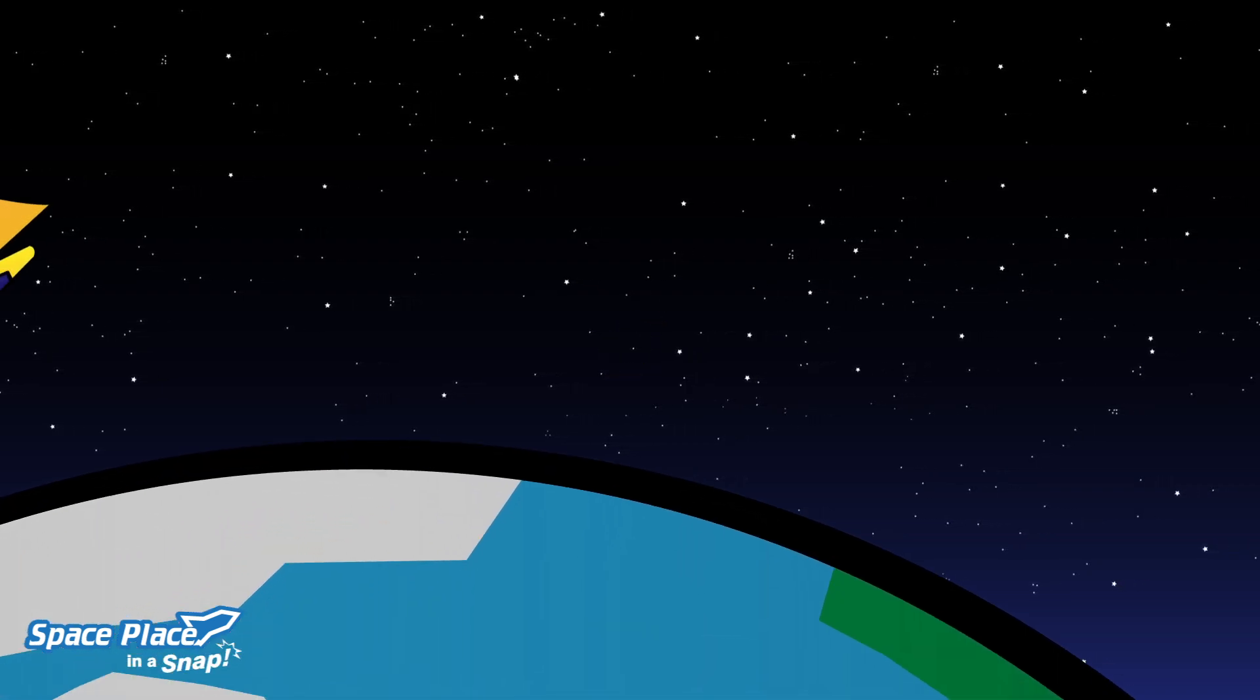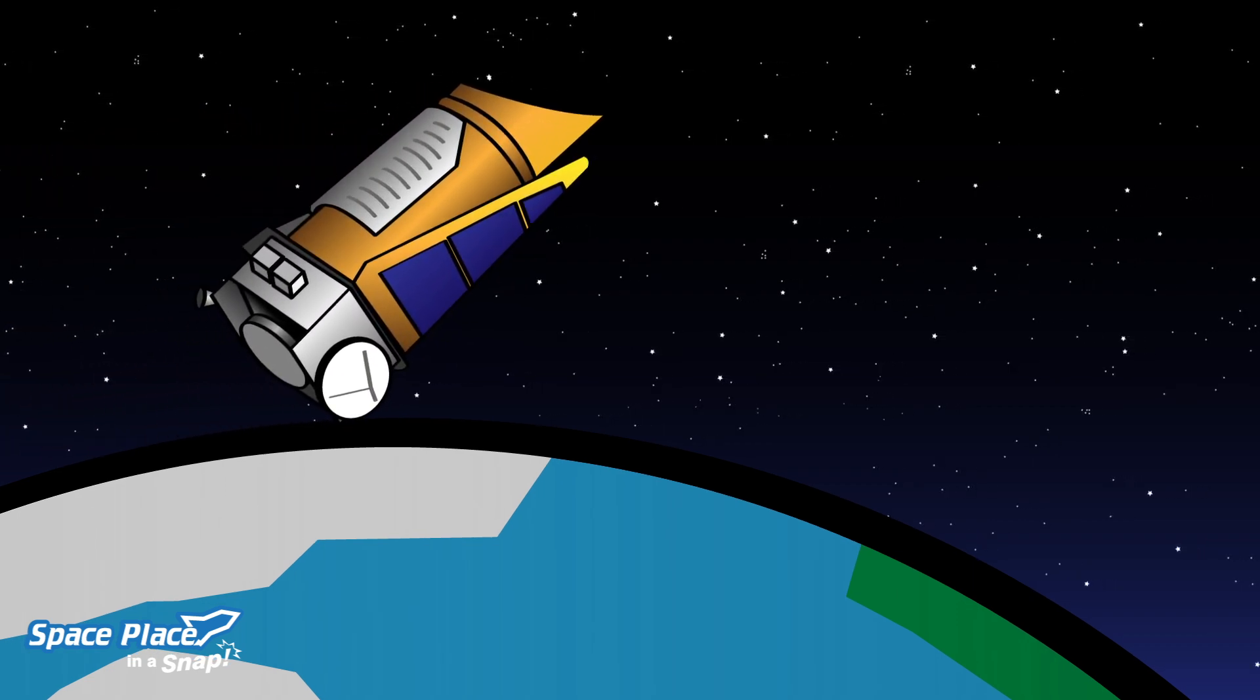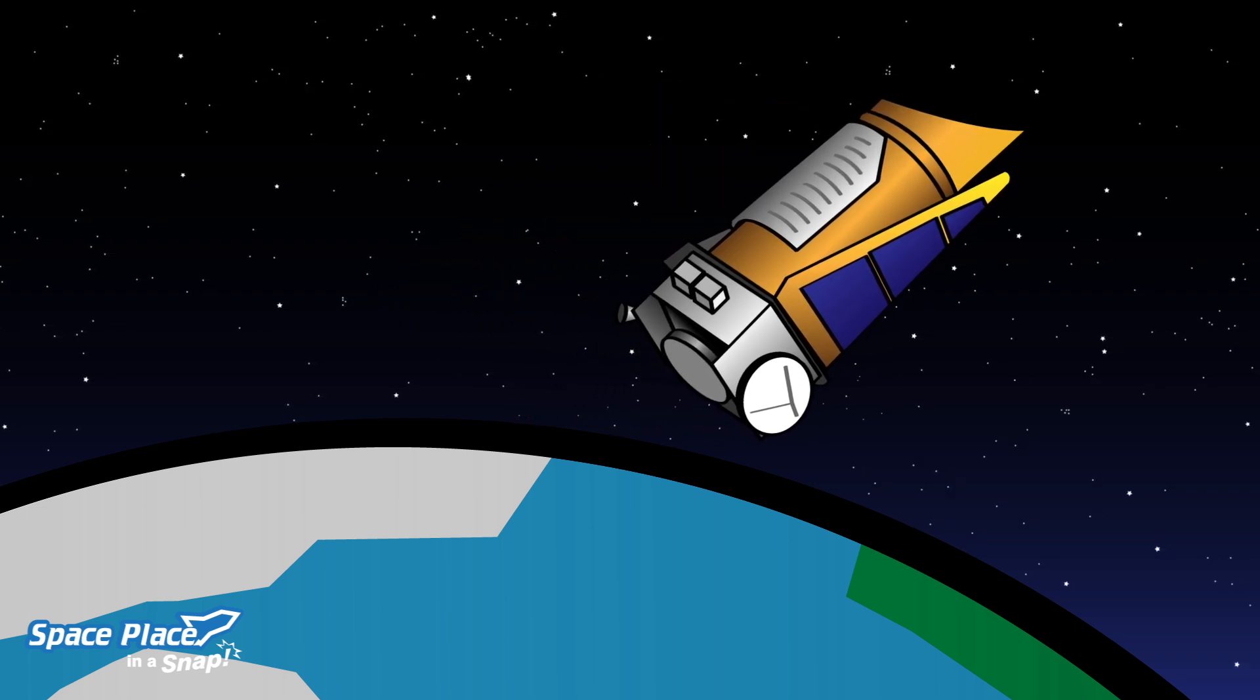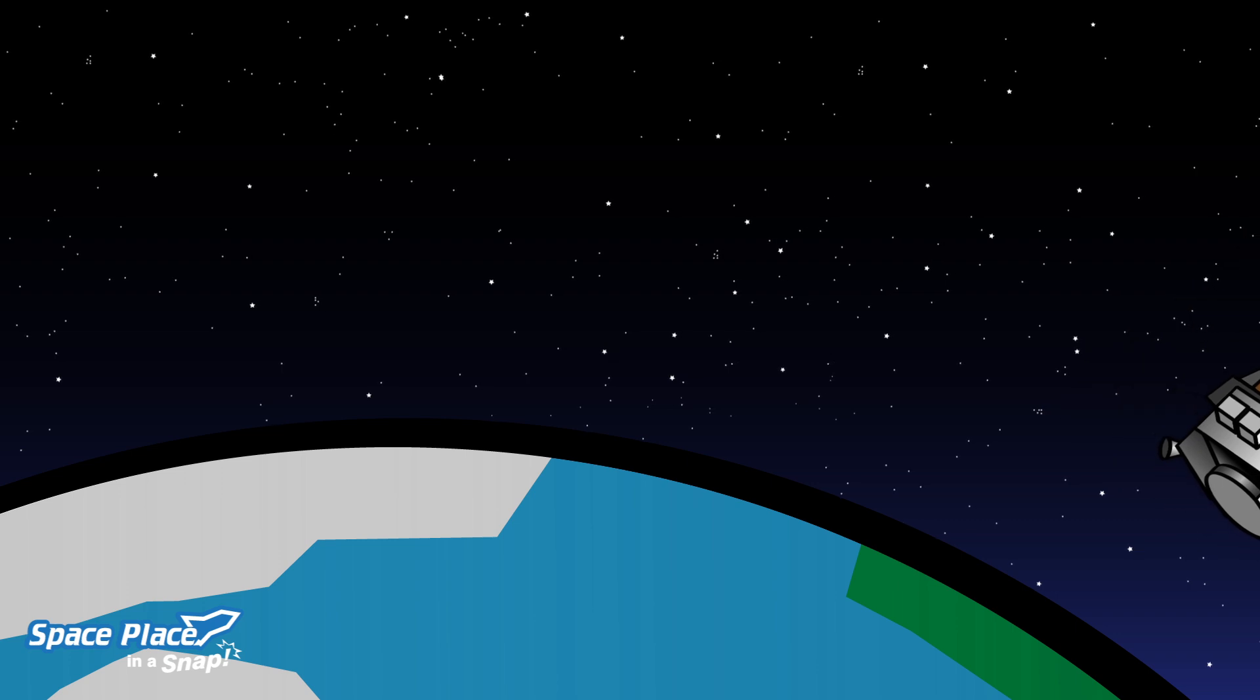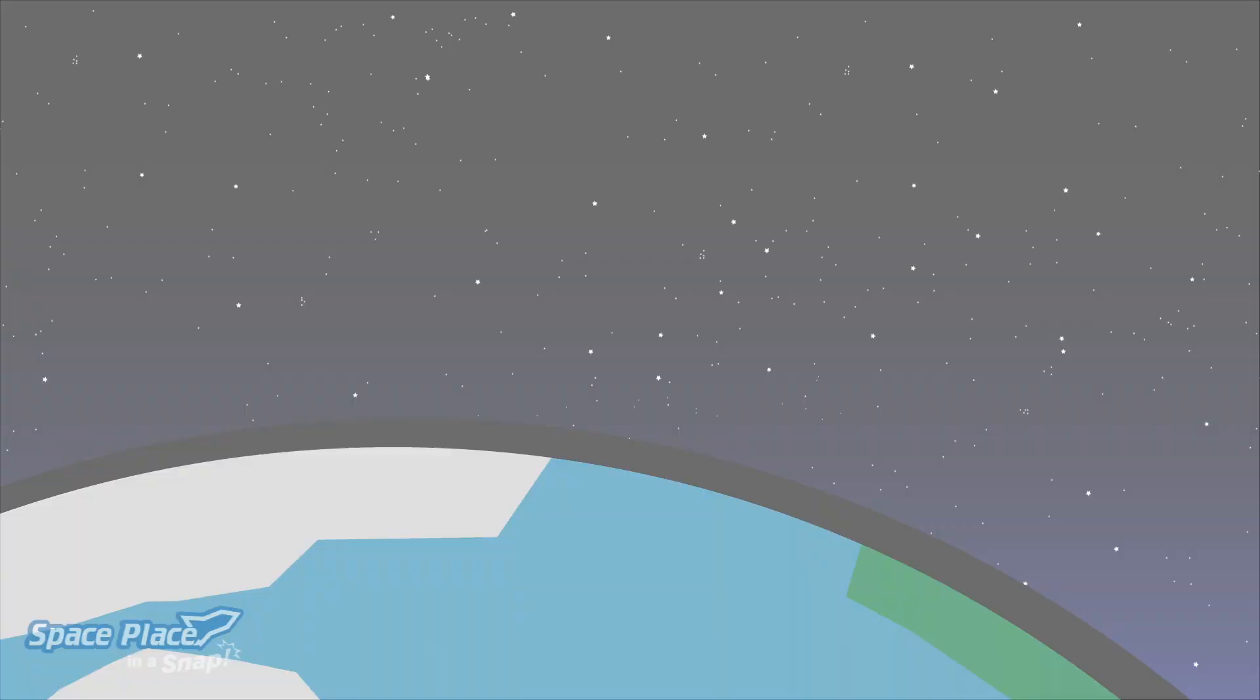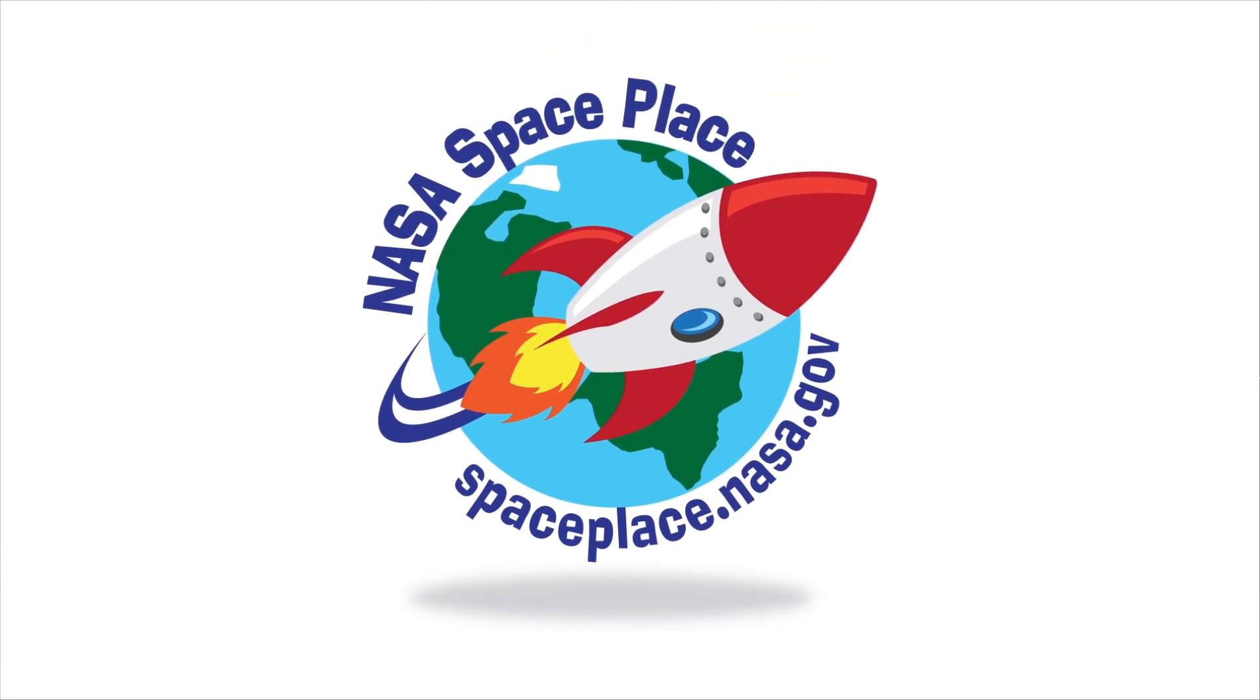A NASA spacecraft called Kepler has found thousands of exoplanets this way. Future missions will be searching too. And who knows, maybe one of those exoplanets could be a home for living things. Find out more about other stars and exoplanets at NASA SpacePlace.